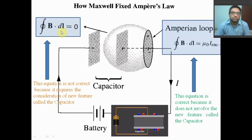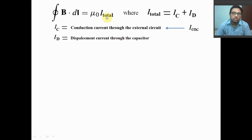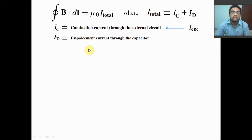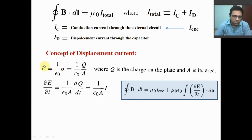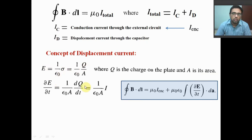How do we fix up this problem? How did Maxwell fix this problem? We consider a total current that can be divided like this: one is the conduction current through the external circuit, and another is a new current we are introducing — that is the displacement current inside the capacitor. Let us try to understand how this displacement current is formed and what is its form.